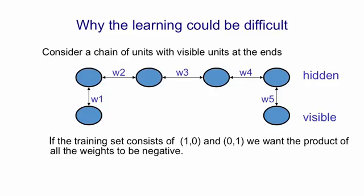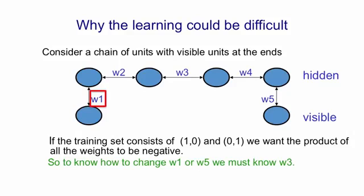What this means is that if we're thinking about learning weight W1, we need to know other weights. So there's W1. To know how to change that weight, we need to know W3. We need to have information about W3. Because if W3 is negative, what we want to do with W1 is the opposite of what we want to do with W1 if W3 is positive. So given that one weight needs to know about other weights in order to be able to change even in the right direction, it's very surprising that there's a very simple learning algorithm.